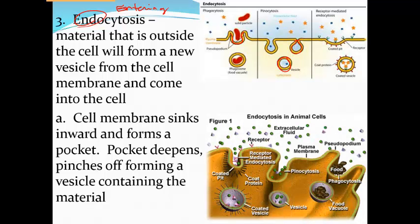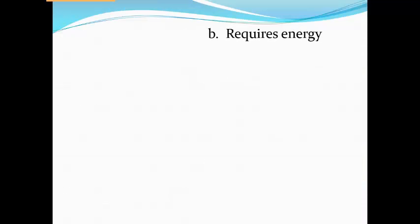So the cell membrane is going to sink inward and form that pocket. And the vesicle, whatever material is inside of there, then is inside of the vesicle. And here's another example. It could be receptors or signals. It could be a vesicle that's containing water droplets. It could be a food vacuole, so there's food that the cell is taking in to use for energy. But endocytosis and exocytosis, both of which require energy.